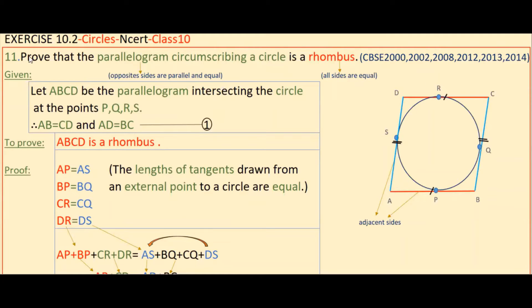Hello everyone. Today I am going to tell the solution of the 11th problem from Exercise 10.2 from the Circles chapter from NCERT Class 10. Prove that the parallelogram circumscribing a circle is a rhombus.